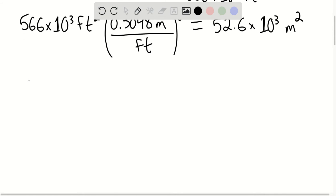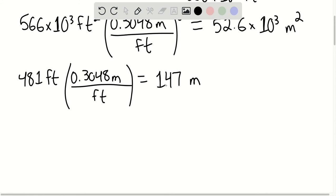We know that the height of the pyramid is 481 feet. We can convert this to meters, and this is giving us approximately 147 meters, rounded to three significant figures.